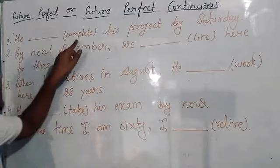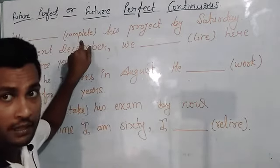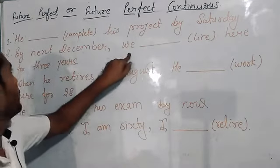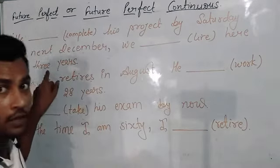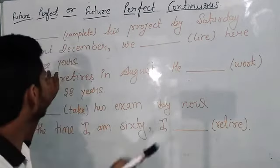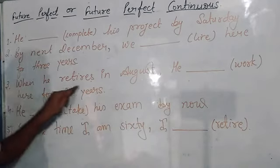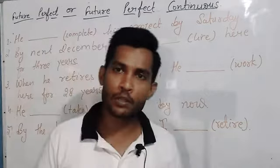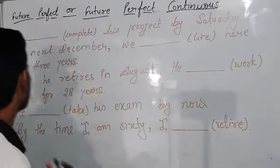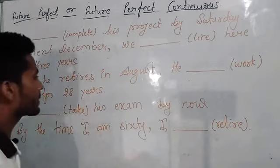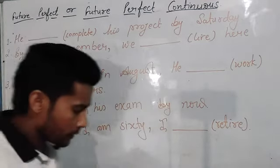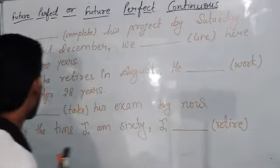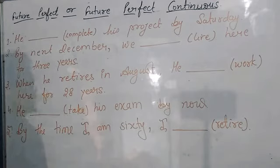He will have completed his project by Saturday, because we are focused on completion of an action. By next December, we will have been living here for three years, because we are talking about duration in future. When he retires in August, he will have been working here for 28 years — focus is on continuity of action in future. Fourth: he will have taken his exam by now — focused on completion of an action. Last one: by the time I am 60, I will have retired.